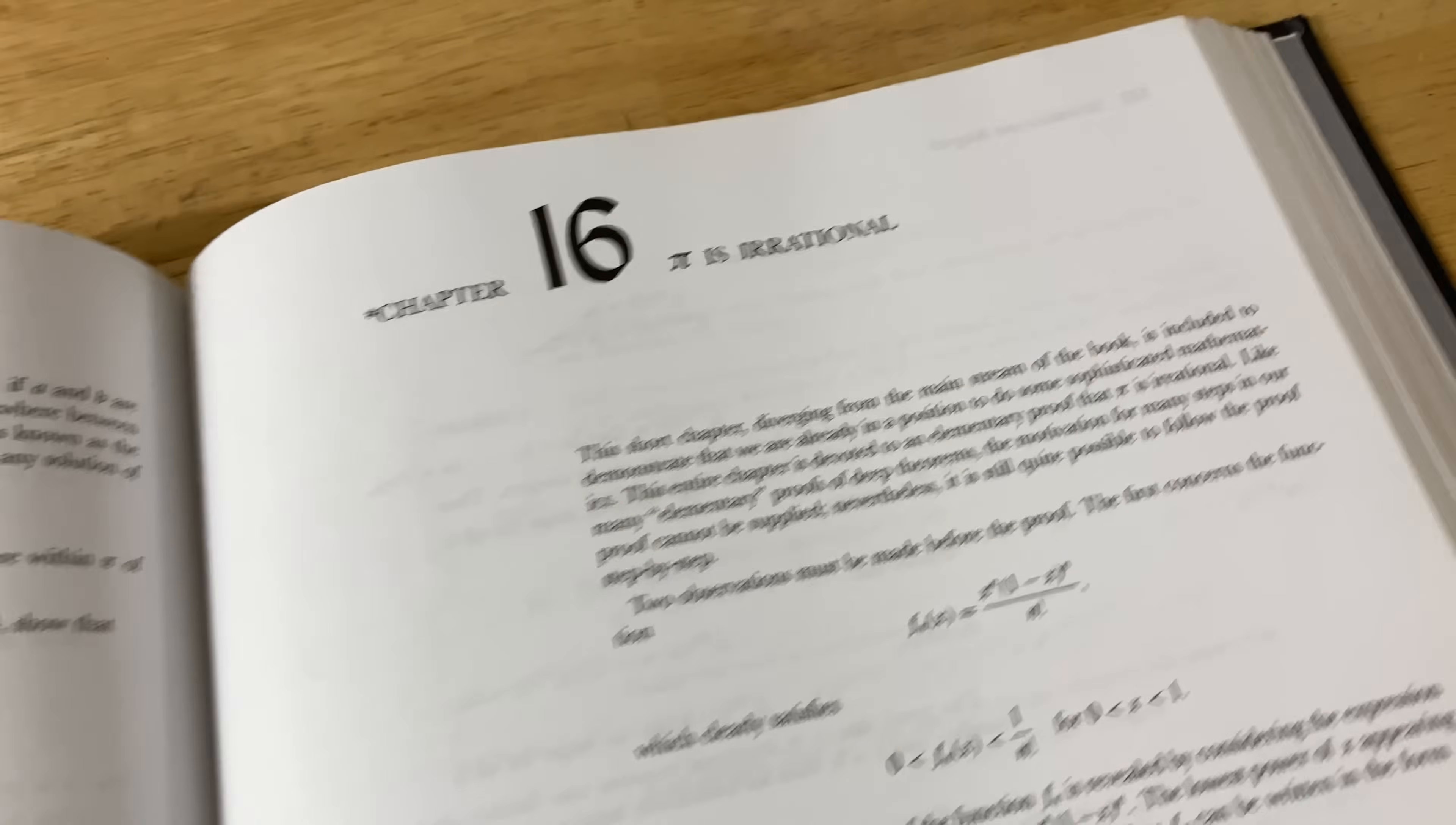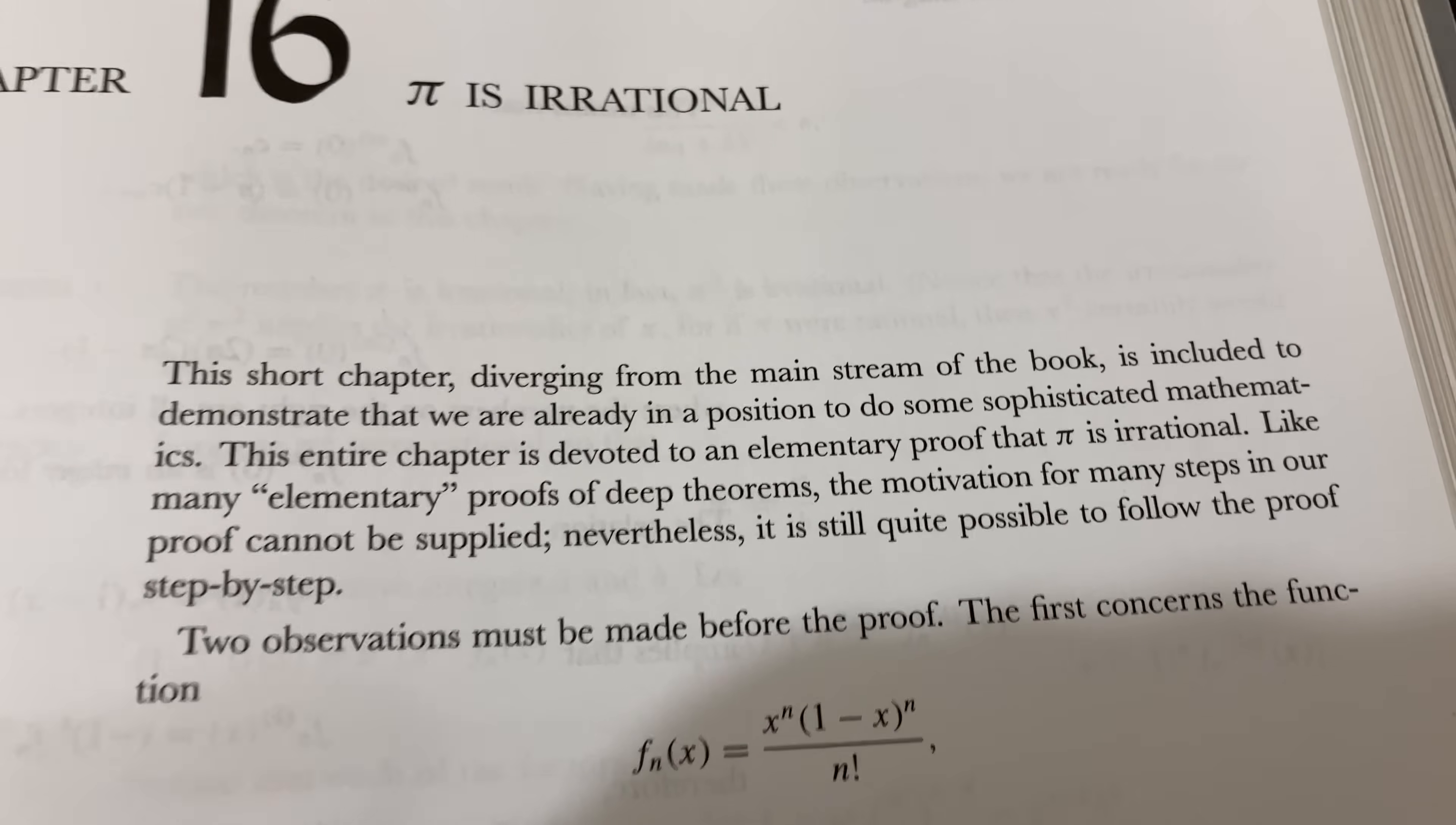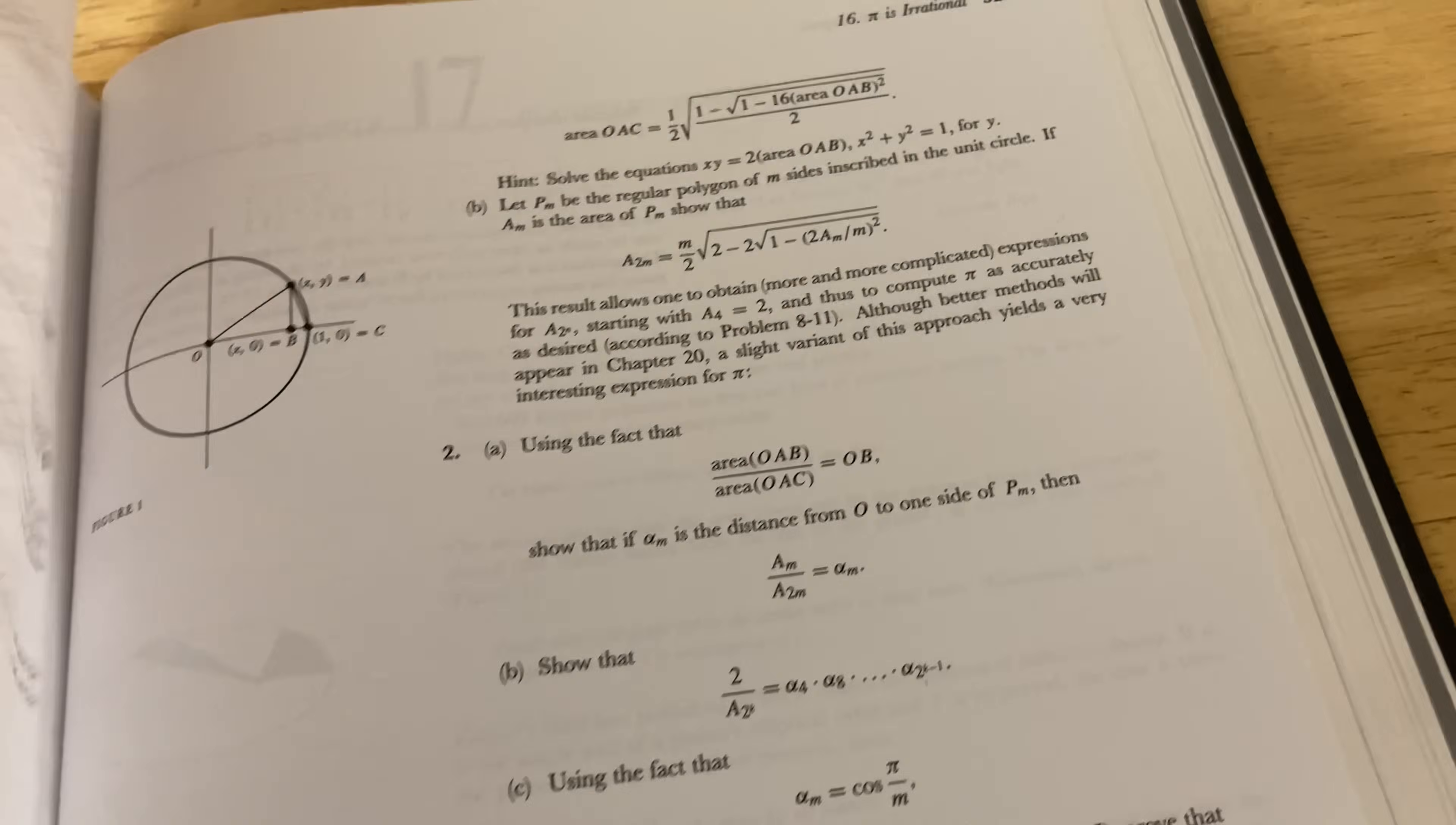But yeah, great book. Chapter 16, Pi is Irrational. This short chapter, diverging from the mainstream of the book, is included to demonstrate that we are already in a position to do some sophisticated mathematics. This entire chapter is devoted to an elementary proof that Pi is irrational. Like many elementary proofs of deep theorems, the motivation for many steps on our proof cannot be supplied. Nevertheless, it is still quite possible to follow the proof step by step. At least, he is honest and he's telling you that you're not going to understand why everything works, but it works. That's something that often happens when you, elementary proofs of deep theorems, the motivation for many of the steps cannot be supplied. Yeah. And it takes some time to find that motivation. And when you do, I think it's really interesting. So, yeah. Very nice. Look at all of this mathematics.